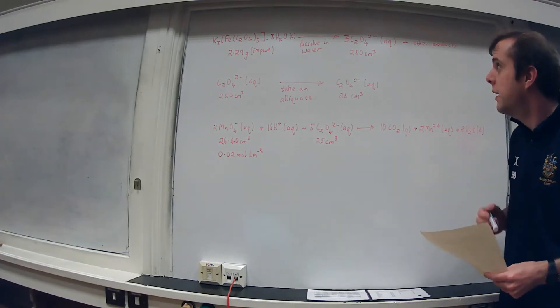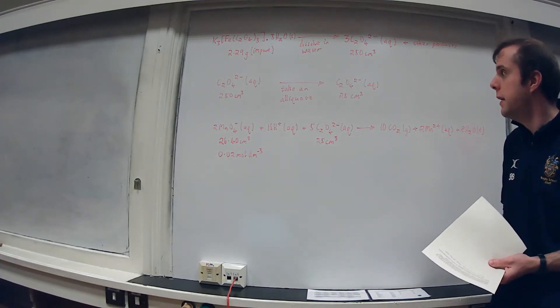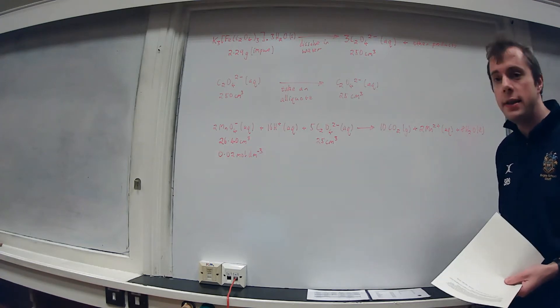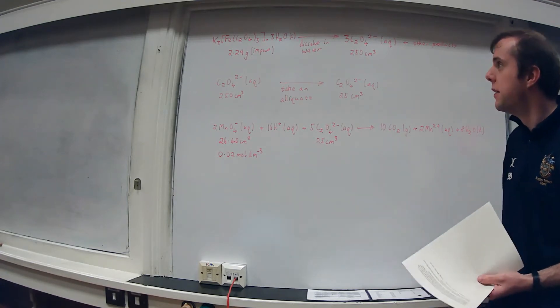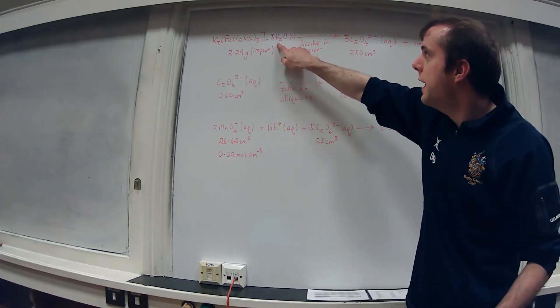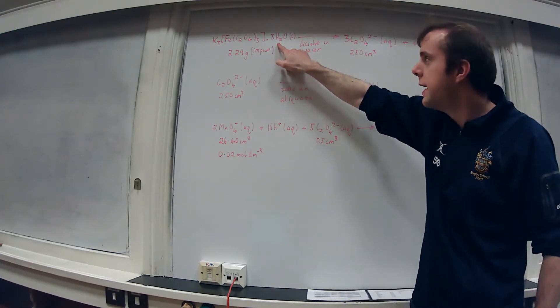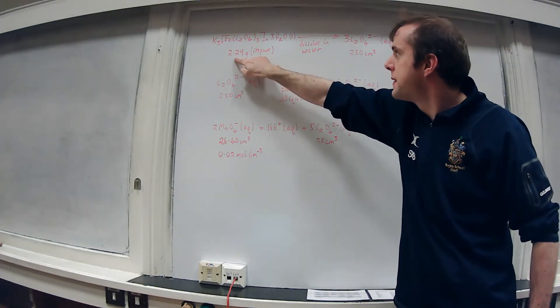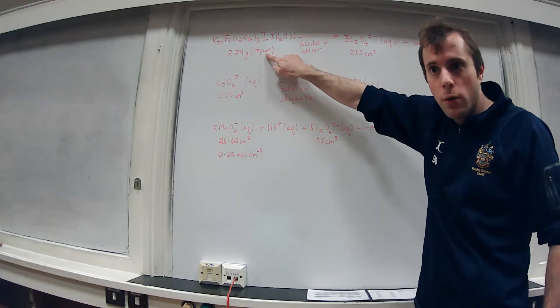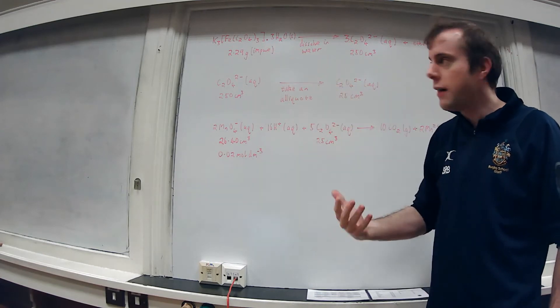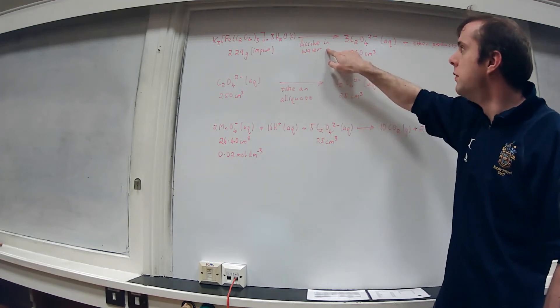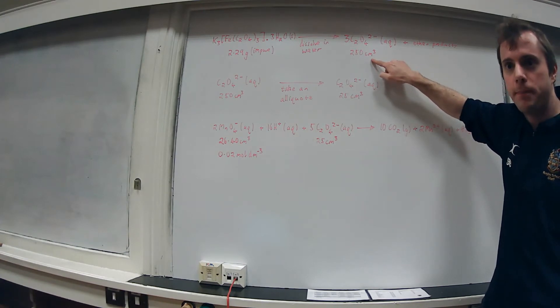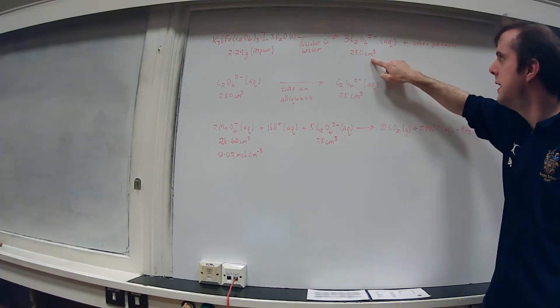As you can see I've now rewritten the question in the form of balanced equations and quasi-equations. So the first part, we've taken an impure salt, it's got quite a complicated formula but we'll stick with it. 2.29 grams, I've written impure just to keep track of what's going on, and we dissolve it in water. Again, 250 cubic centimeters, I've written that down to keep track of it.